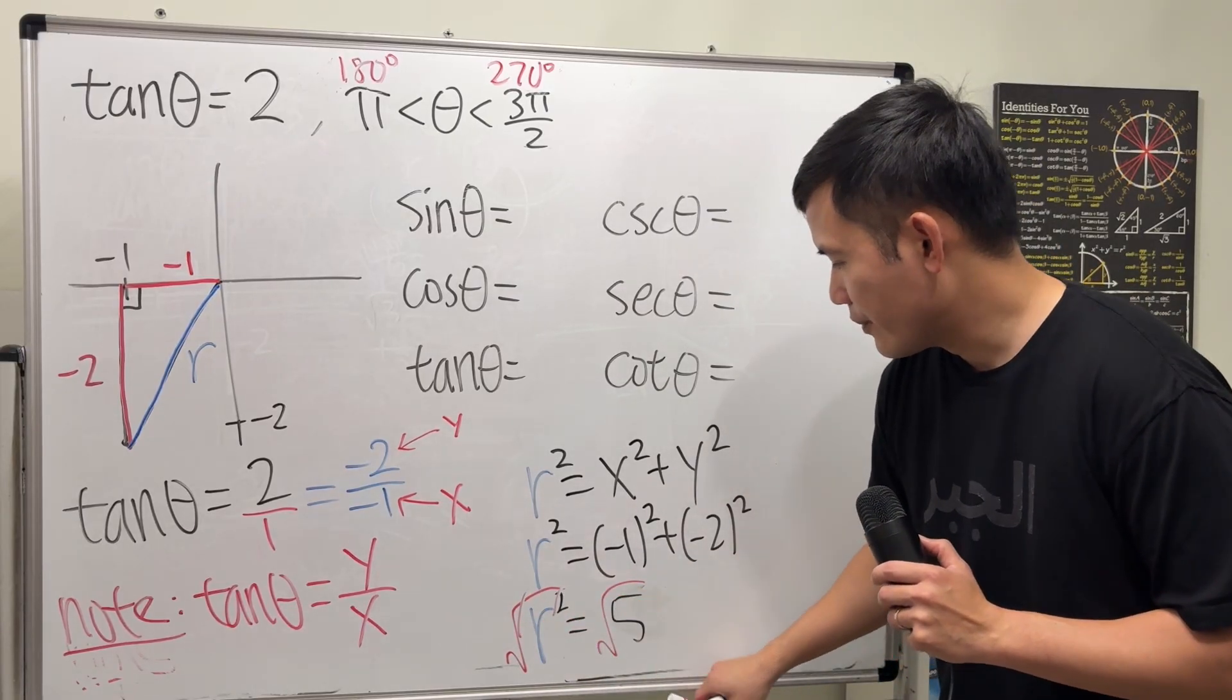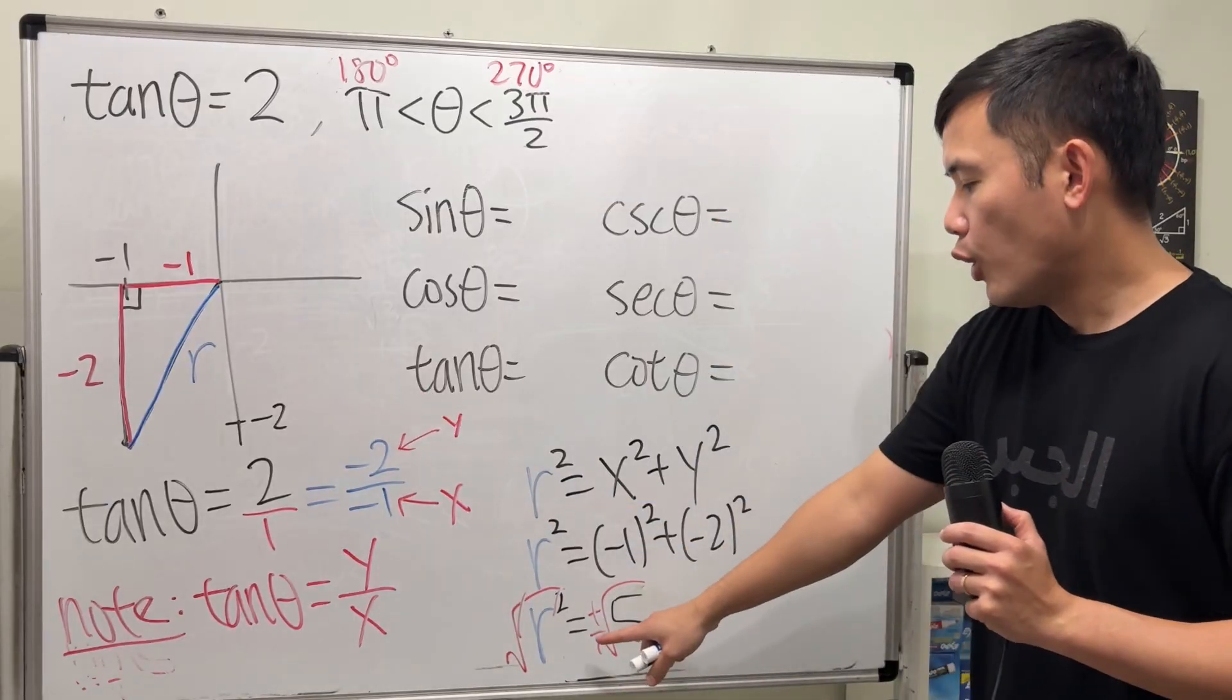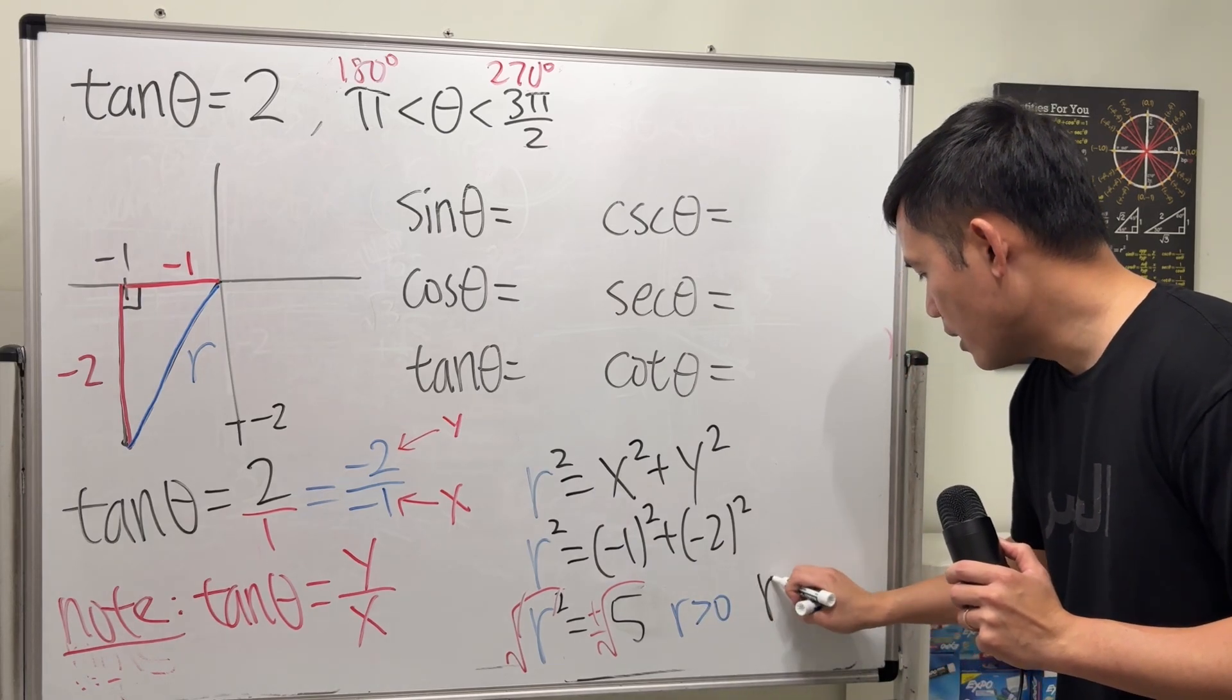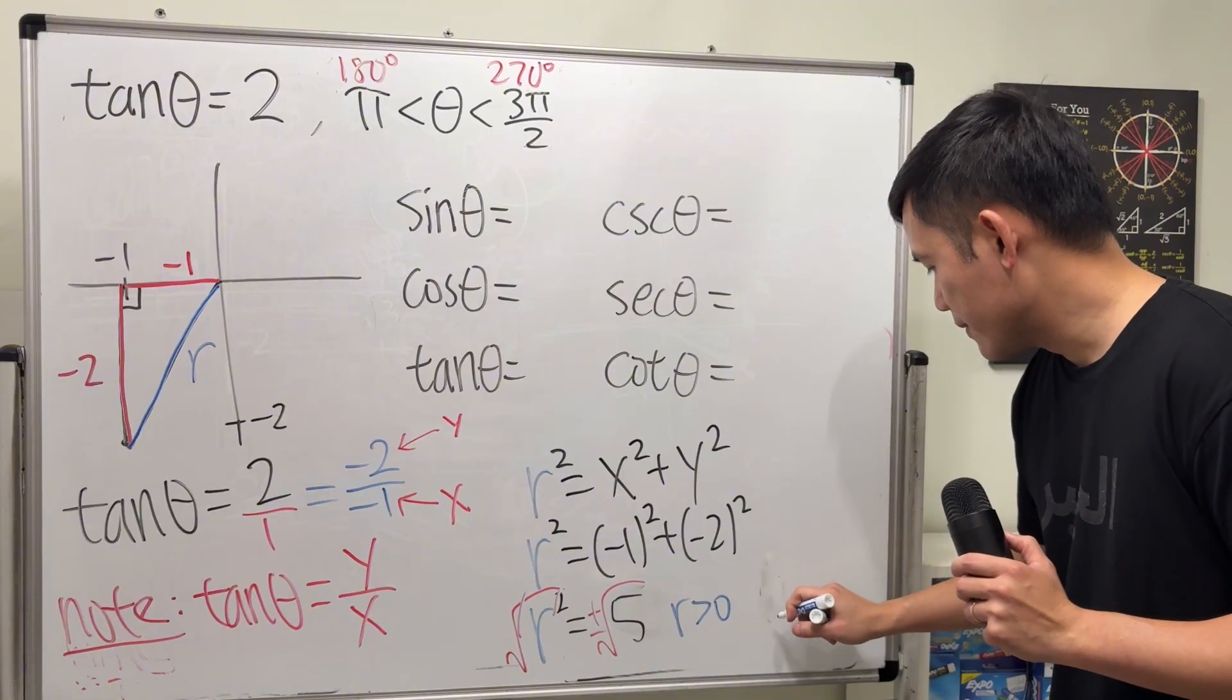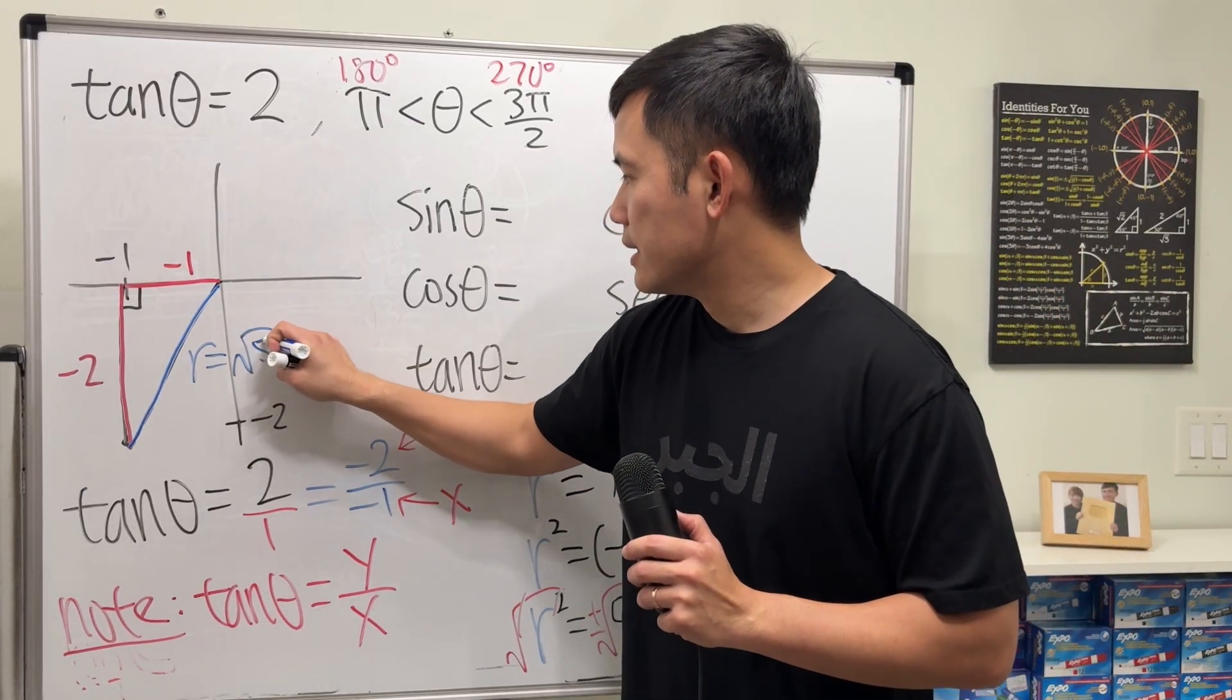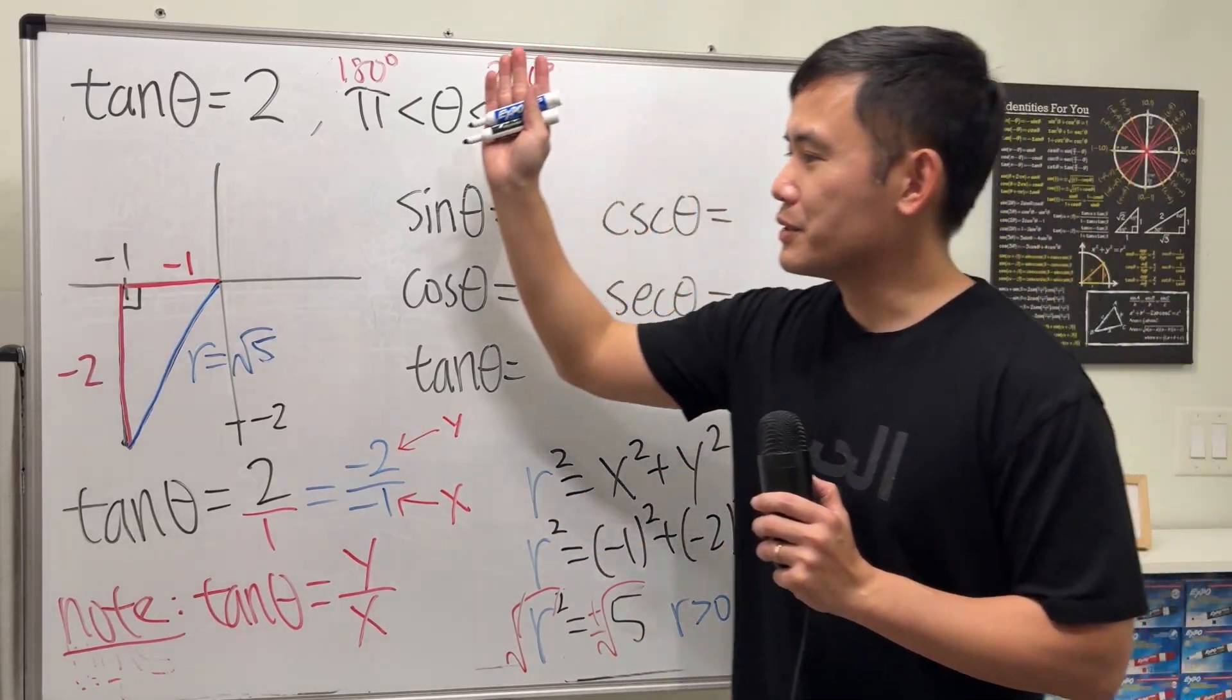We have r is equal to plus or minus square root of 5. However, when you are doing this kind of question, you always have r being positive. r is always positive. x and y could be negative, just like in this case.